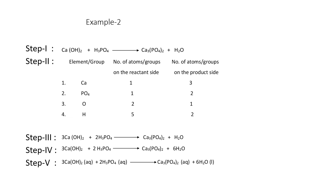Both calcium and phosphate are unbalanced. We balance calcium first by placing 3 before calcium hydroxide — calcium is now balanced. Then we check the phosphate group: the product side has 2 phosphate groups, so we place 2 before phosphoric acid — phosphate is now balanced. Oxygen and hydrogen are still unbalanced, so we move to step four.